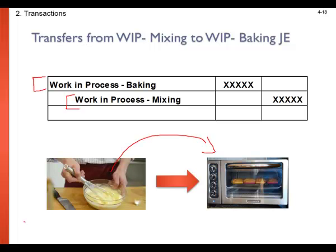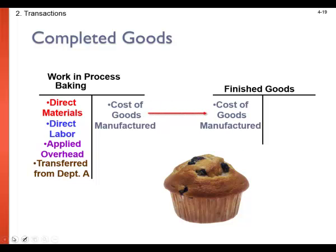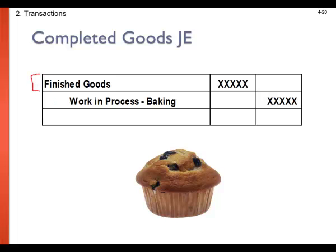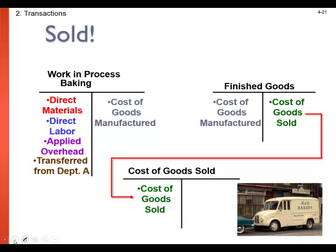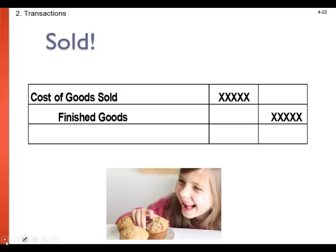Finally, when goods are completely finished, we move the cost from the last department — the baking department — into the finished goods account, which can be thought of as a warehouse account, signifying that nothing else will be done in terms of labor, materials, or overhead. We increase finished goods with a debit and reduce the work in process for baking with a credit. When we sell our product to the customer, we move the goods from the finished goods account into an expense account called cost of goods sold, which appears on the income statement. Cost of goods sold is increased with a debit and finished goods is reduced with a credit.